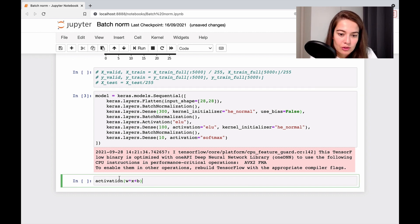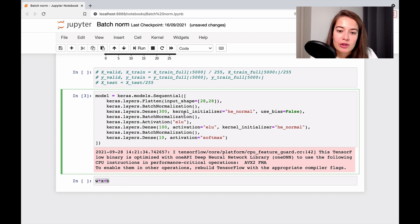Because what you're doing is, so this is how you calculate the output of a layer. Well, now you're saying, okay, I'm not going to have activation. Well, now you have this. So this is your output, right? And this is the output that you give to batch normalization.